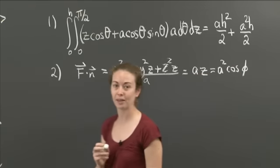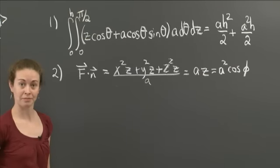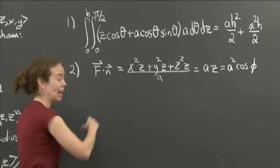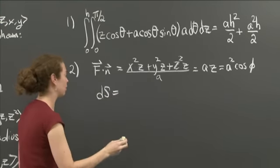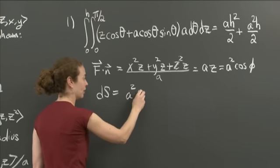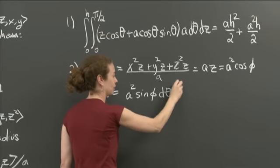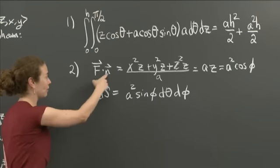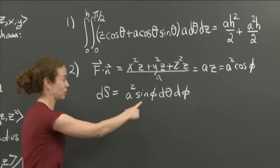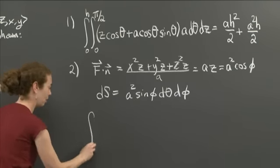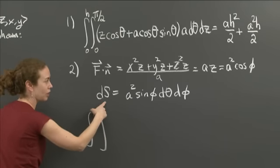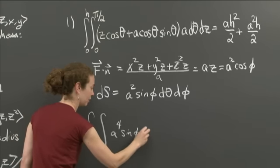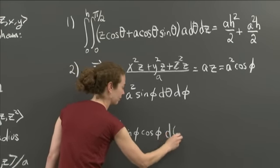So f dot n equals a² cos φ. Now, for the flux we need the integral of f dot n dS. On a sphere, dS = a² sin φ dθ dφ. Putting it together, f dot n · dS = a⁴ sin φ cos φ dθ dφ. Now I just need the correct bounds for theta and phi.